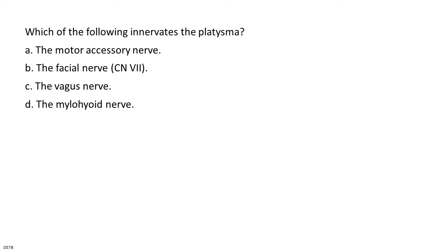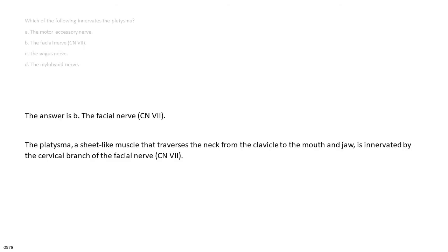Which of the following innervates the platysma? A. The motor accessory nerve. B. The facial nerve, CN7. C. The vagus nerve. D. The mylohyoid nerve. The answer is B, the facial nerve, CN7. The platysma, a sheet-like muscle that traverses the neck from the clavicle to the mouth and jaw, is innervated by the cervical branch of the facial nerve, CN7.